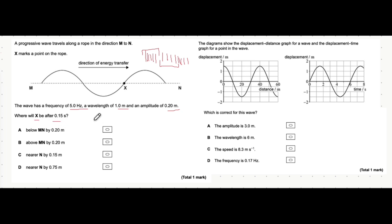Straight off the bat this looks like a question that relates to time period. The time period is 1 over frequency. In this case it's 1 over 5 hertz which is 0.2 seconds. What this tells us is the time taken for one complete wavelength.